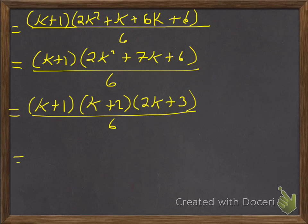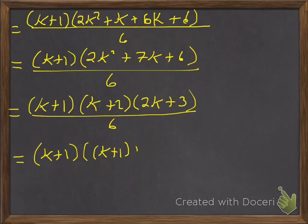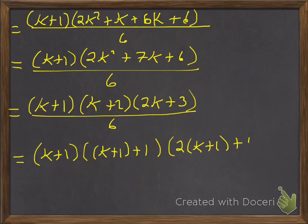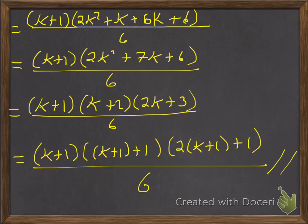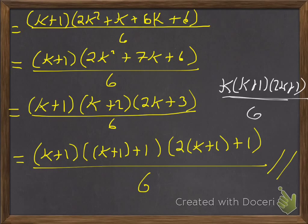That factors into (k+1)(k+2)(2k+3) all over 6. Now comparing to the original formula k(k+1)(2k+1) over 6: where we had k, we now have k+1; where we had k+1, we now have k+2; and where we had 2k+1, we now have 2(k+1)+1, which is 2k+3. So this does fit the form we wanted, showing the formula is true by induction.